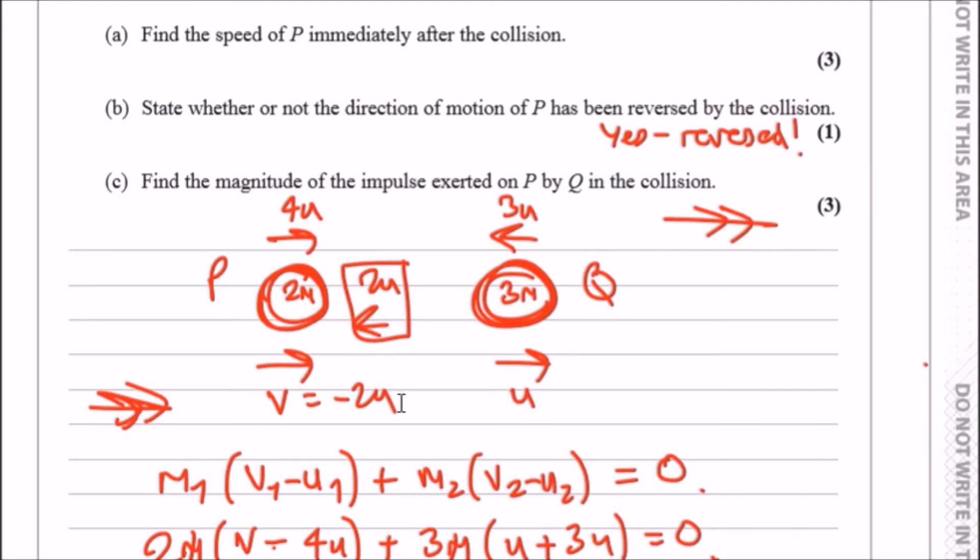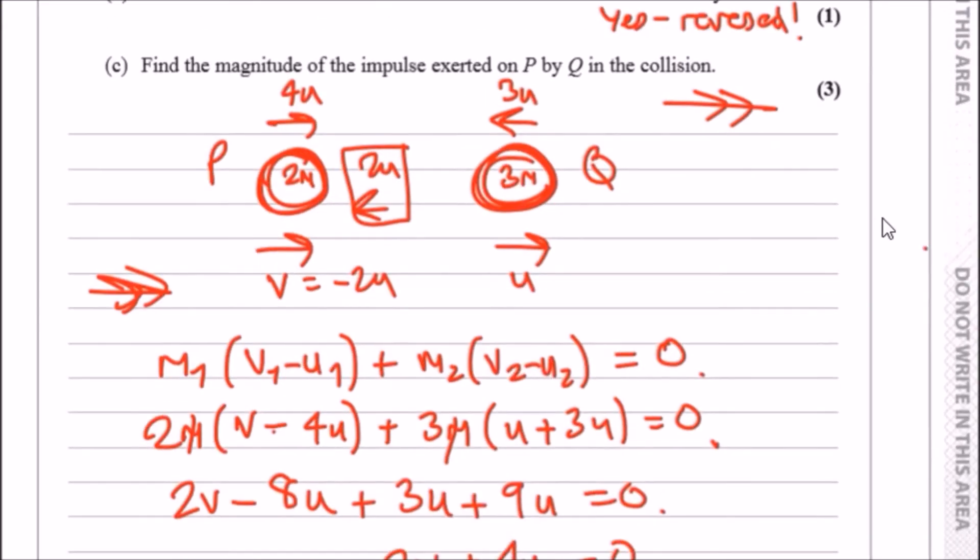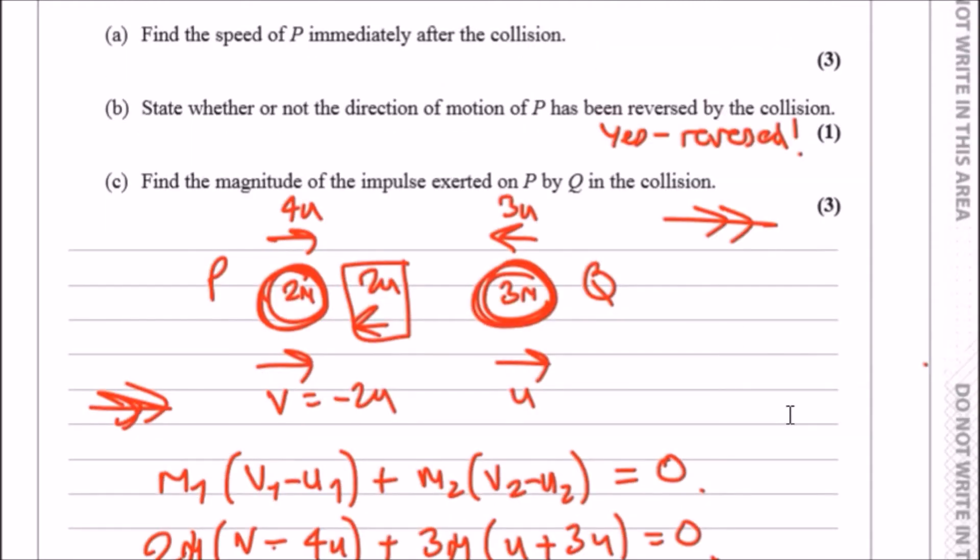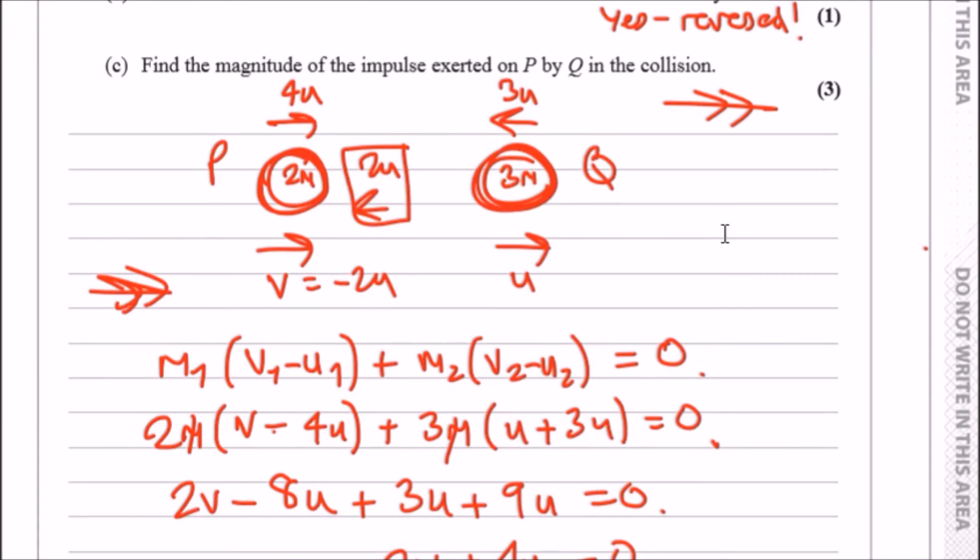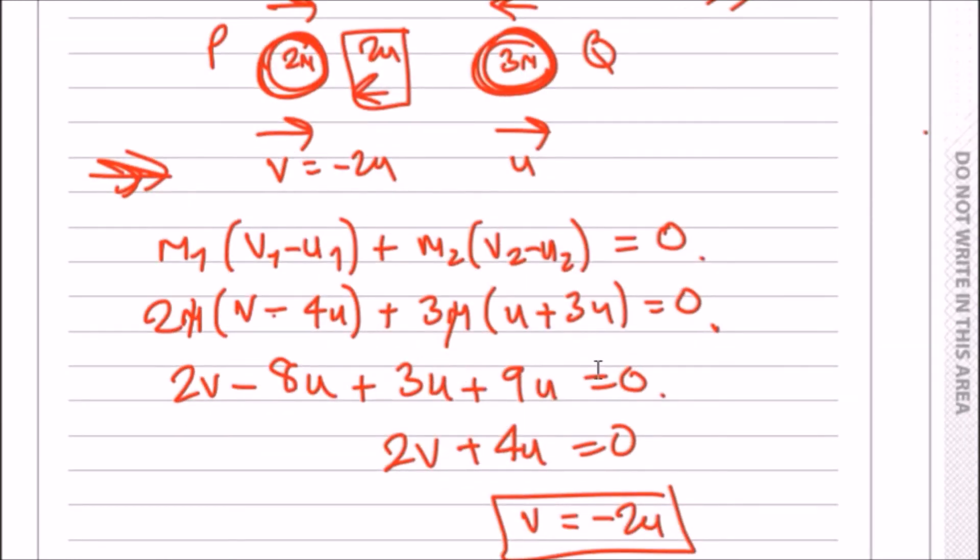The arrow should really be pointing left with a speed of 2u or right with a speed of negative 2u. Now finally, an easy part: find the magnitude of the impulse exerted on P by Q in the collision.